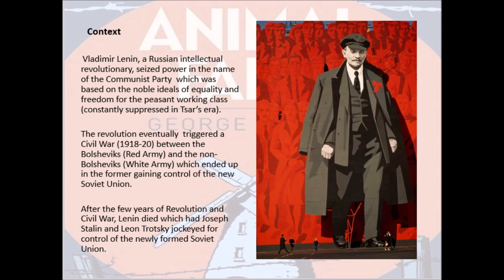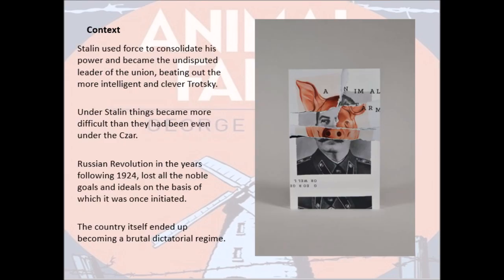After a few years of revolution and civil war, Vladimir Lenin, the architect of this revolution, died. This left Joseph Stalin and Leon Trotsky — the other two great revolutionaries who had walked alongside Lenin — to fight for control and power of the newly formed Soviet Union. Things started getting messy because Stalin used force to consolidate his power, gained the upper hand, and became the undisputed leader of the union.